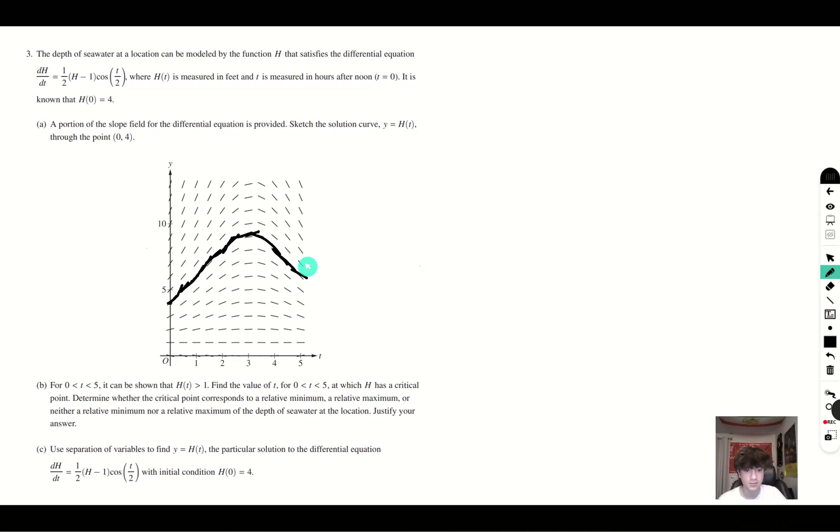For the interval zero to five, it can be shown that h of t is greater than one. So for the value of t for the interval zero to five, at which h has a critical point, determine whether the critical point corresponds to a relative minimum, maximum, or neither a relative minimum or maximum of the depth of seawater in the location. Justify your answer. As we can see here, here is our graph of dh dt. And we can see here that this is a maximum because the slope goes from positive to negative.